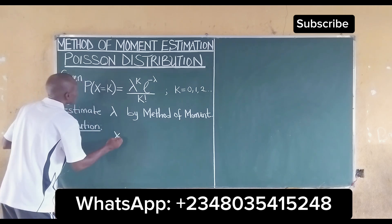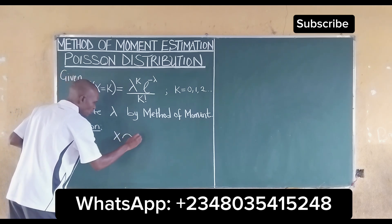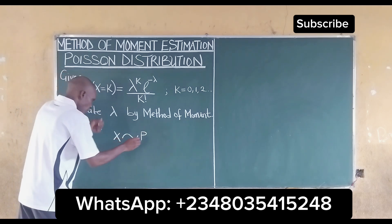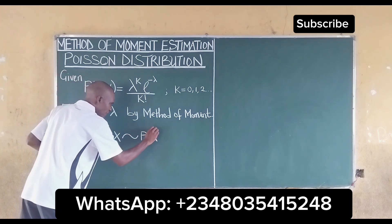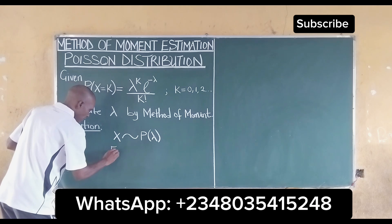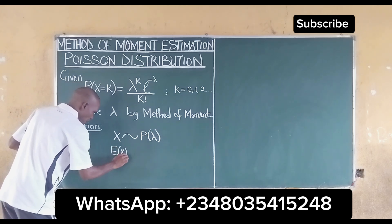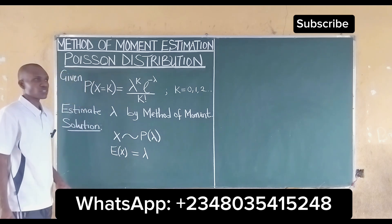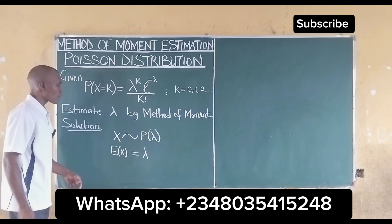For the Poisson distribution, we should note that x follows the Poisson distribution of lambda. It then means that the expected value of x is equal to lambda for the Poisson distribution.